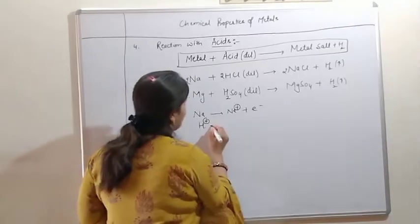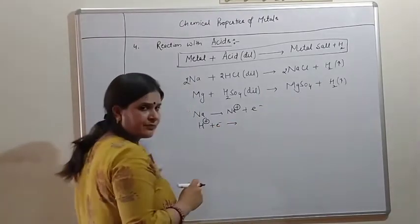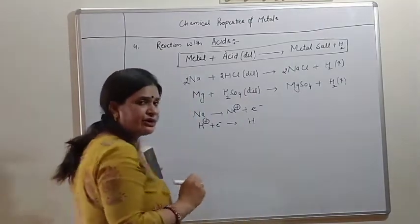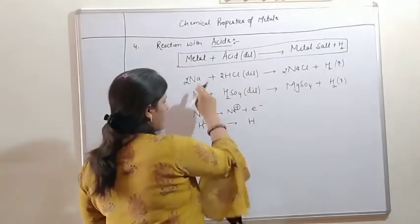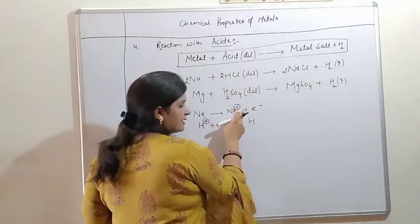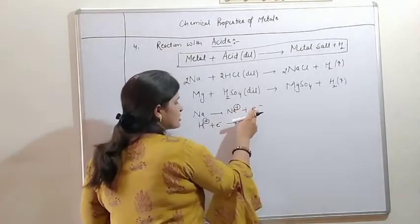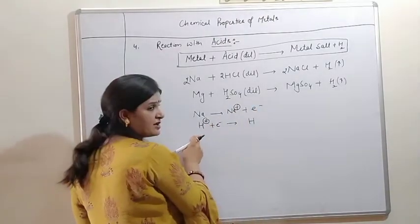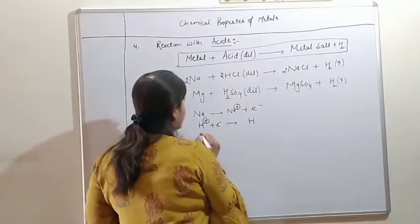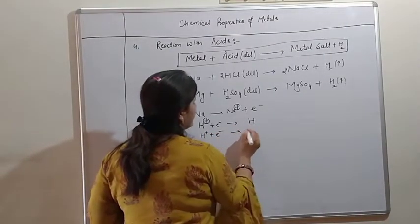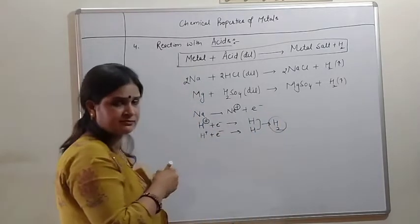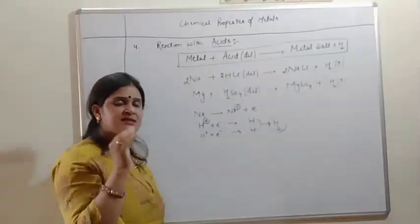These H+ ions will accept and gain these electrons and convert into hydrogen atoms. They get reduced. Many sodium atoms lose electrons forming sodium ions. The electrons lost are accepted by the H+ ions from the acid, resulting in the formation of hydrogen atoms, and these hydrogen atoms get combined together to form hydrogen gas.